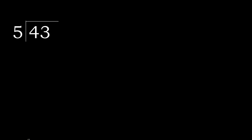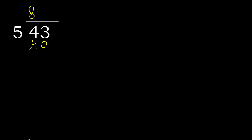43 divided by 5. 4 is less, therefore next. 43 is not less, therefore we work with 43. 5 multiplied by which number is nearest to 43 but not greater? 5 multiplied by 9 is 45 — 45 is greater. 5 multiplied by 8 is 40 — 40 is not greater.